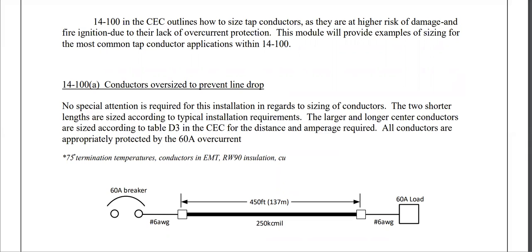14-100A is the first exception: conductors oversized to prevent line drop — no special attention is required. In this installation, someone has chosen to use a significantly larger conductor for a portion of the run simply to accommodate line drop. At the point where we go from a large conductor to a small conductor, the rule states there's no additional overcurrent protection required, because the breaker already adequately protects the smaller size conductor which terminates at the load.